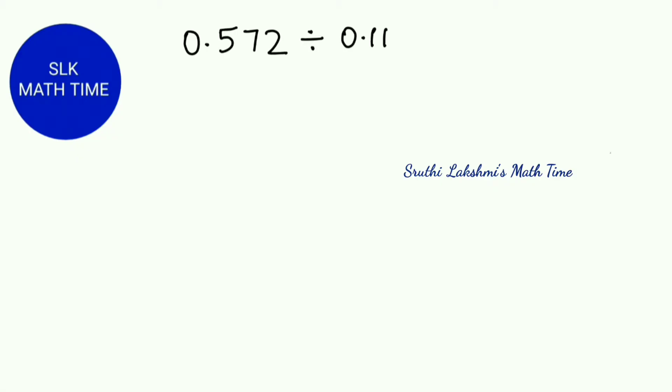There's a very simple procedure that we can use to make it so our divisor is not a decimal number. To do that, we just have to shift the decimal point in our divisor to the right until it's a whole number. But if we do that, we also have to shift the decimal point in our dividend to the same amount in the same direction, which is right.